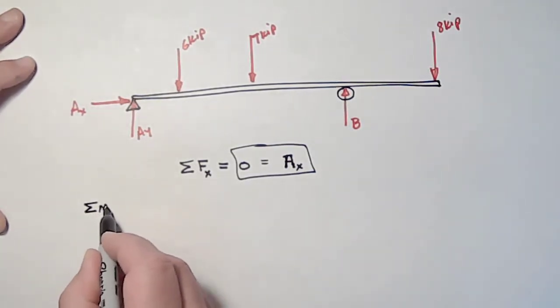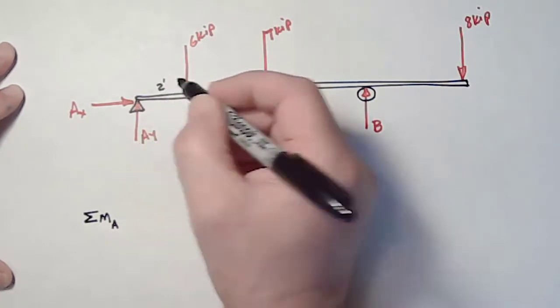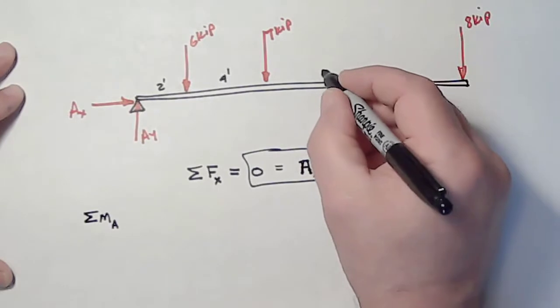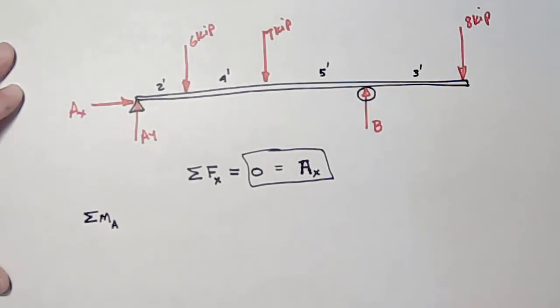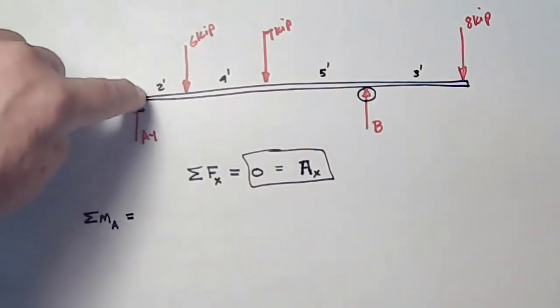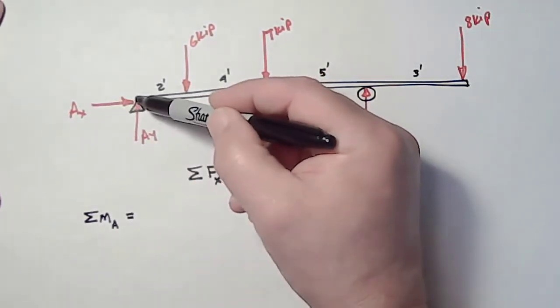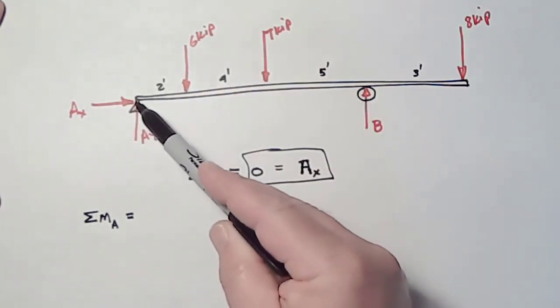I will now sum moments about point A. If I look at the problem statement, that's two feet. This is four feet between those two forces, five feet between those two forces, and three feet between those two forces. So let's just begin from left to right. If I take the forces about point A, AX and AY go directly through point A, so their moment arms are zero. These two forces do not contribute to the moment.